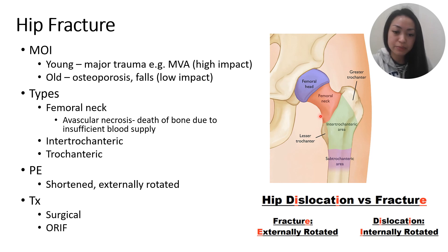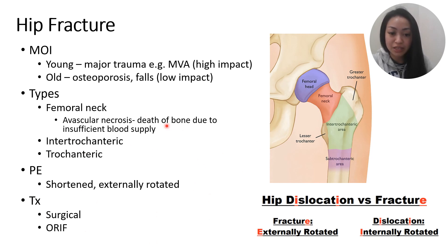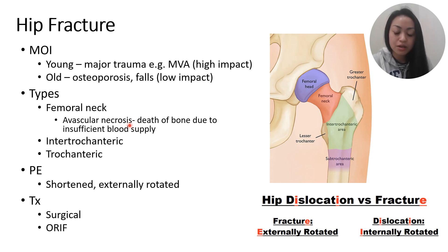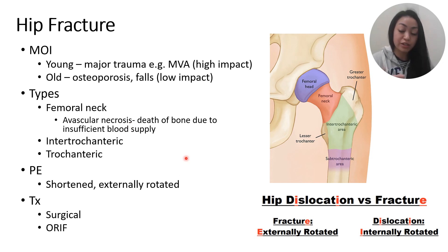The femoral neck fracture is very important to remember because it can lead to avascular necrosis — the death of the bone due to insufficient blood supply. In terms of physical examination, if someone comes in with a hip fracture, the affected limb would be shortened and externally rotated. Most of the time with hip fractures, the patient presents with a shortened, externally rotated leg on the affected side.